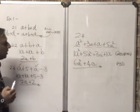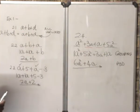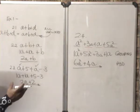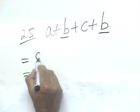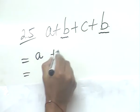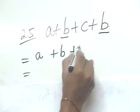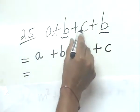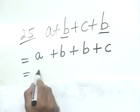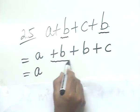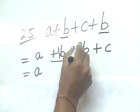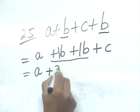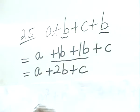Moving on to 2.5. You can see there are two B's with the same powers. So you write A on its own, plus this B, plus that other B, and plus C at the end. A remains on its own. Plus B plus B really means plus 1B plus 1B — that's 1 plus 1, which is 2. So it's A plus 2B plus C. That's your final answer for 2.5.